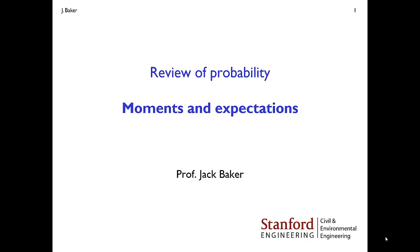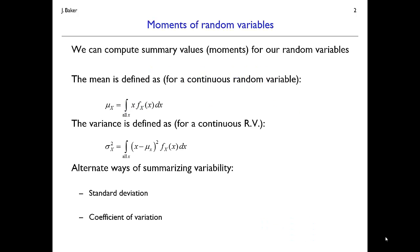Now that we've learned a little bit about random variables, we can do some other operations on these random variables to compute moments and expectations. Let's look at a few slides to understand those concepts. First, let's talk about moments of random variables — we can describe these moments as summary values for the random variable. While the probability density function or the cumulative distribution function gives a complete description of that random variable, these moments give us some sort of partial summary of the properties of that random variable.